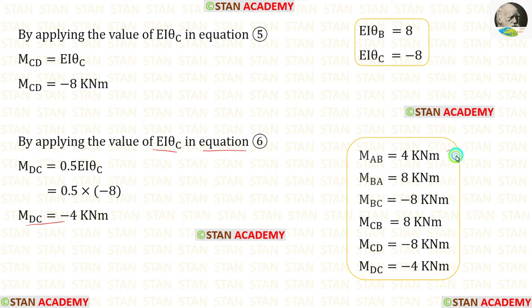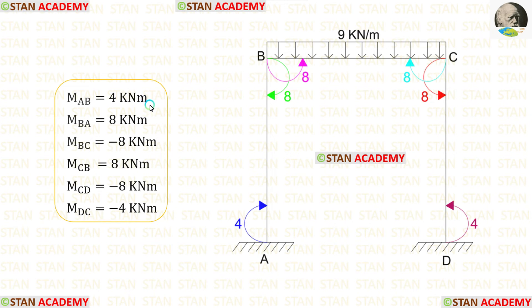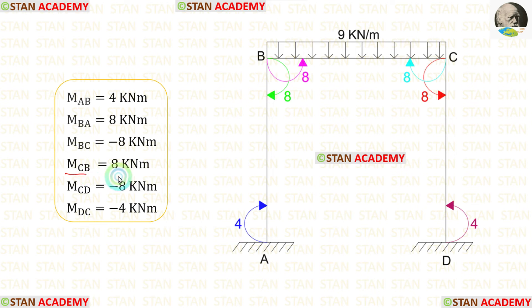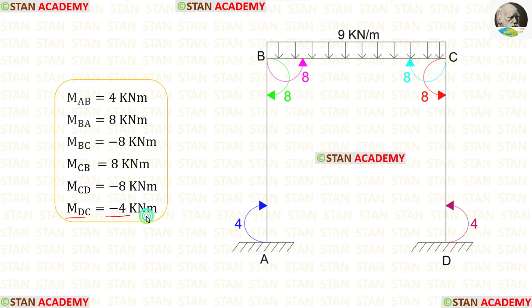In this analysis, we have calculated all of the moments. M_AB has a positive value, meaning it acts in the clockwise direction. M_BA also has a positive value, acting clockwise. M_BC has a positive value, acting clockwise. M_CB has a negative value, acting in the anti-clockwise direction. M_CD has a negative value, acting in the anti-clockwise direction. Finally, M_DC has a negative value, acting in the anti-clockwise direction.